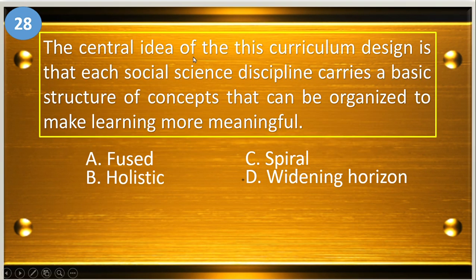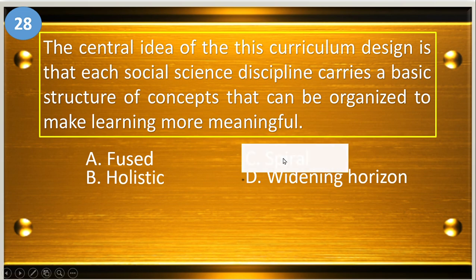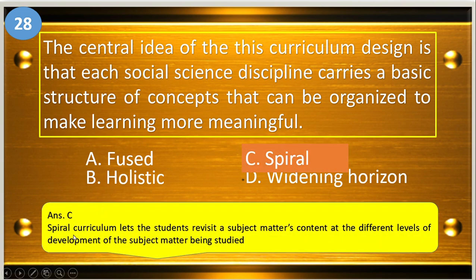Number twenty-eight: the central idea of this curriculum design is that each social science discipline carries a basic structure of concepts that can be organized to make learning more meaningful. A, fused; B, holistic; C, spiral; and D, widening horizon. The answer is spiral, letter C.